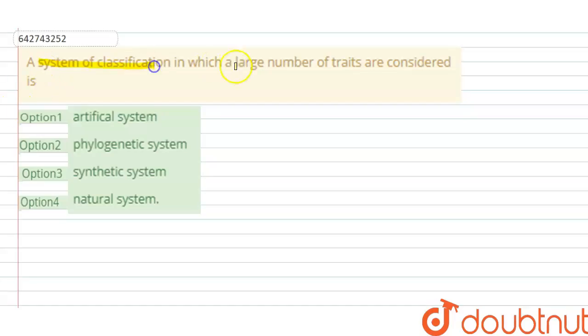that a system of classification in which a large number of traits are considered is: Option 1, artificial system; Option 2, phylogenetic system; Option 3, synthetic system; and Option 4, natural system. Hence, a system of classification in which a large number of traits are considered is known as the natural system of classification.